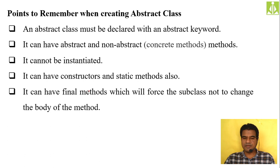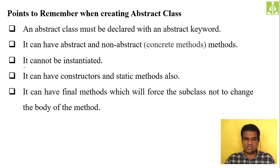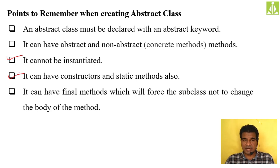An abstract class must be declared with the abstract keyword. It can have both abstract and non-abstract methods and it cannot be instantiated. It can have constructors and static methods as well — even though it cannot be instantiated, you can put constructors and static methods inside an abstract class.